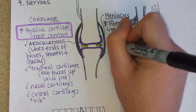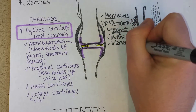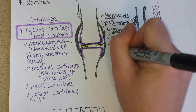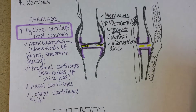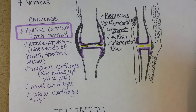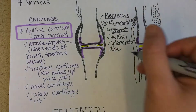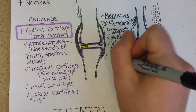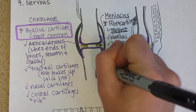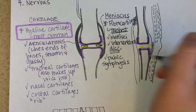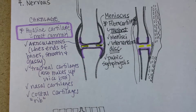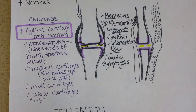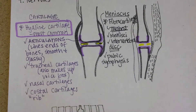In between each of your vertebrae is something called an intervertebral disc, and that is made of fibrocartilage. It has a pulpy interior, and if you've heard of someone herniating a disc, they have damaged a piece of fibrocartilage. The other place you have fibrocartilage is the pubic symphysis, where the anterior part of your pelvis is held together. If it were to come apart, the two sides of the hips could move freely, which is very painful — that can happen in someone who has had many pregnancies.